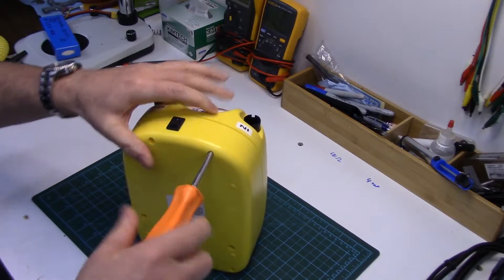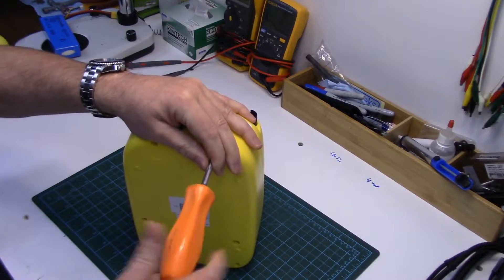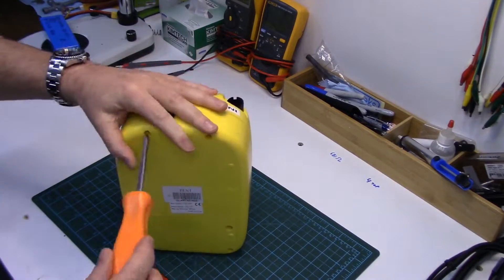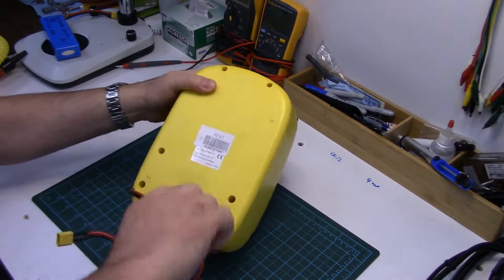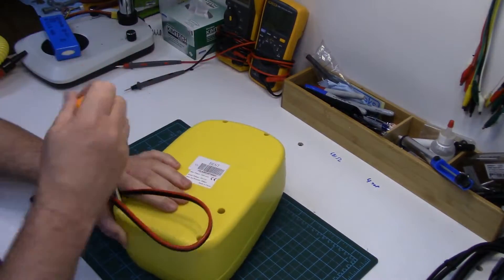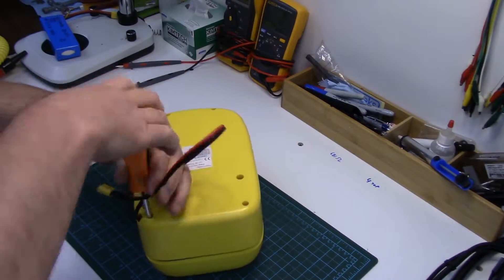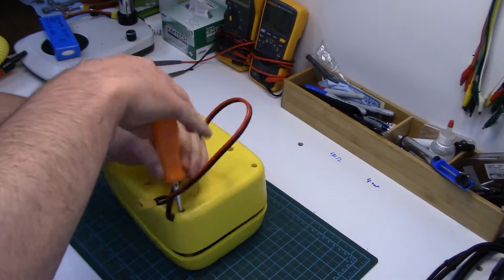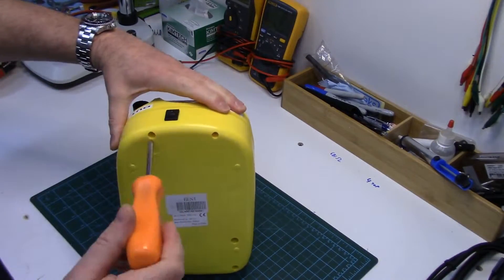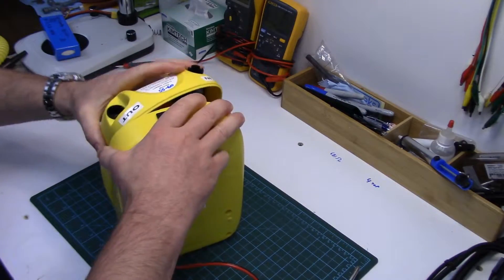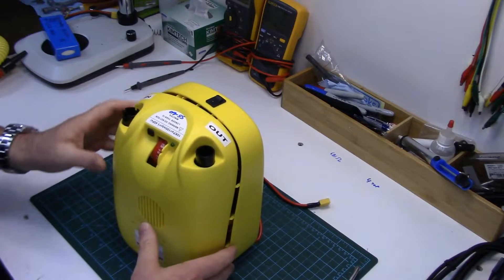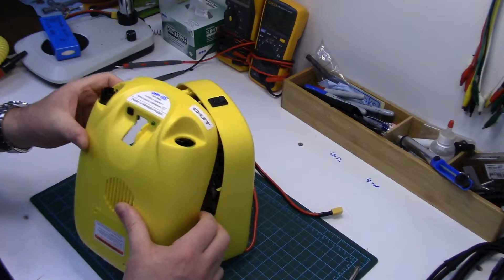So there's four Phillips screws. Let's fast forward through this. Okay, so these were a proper bugger to get out.